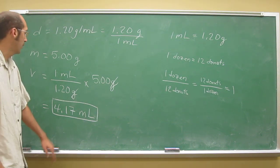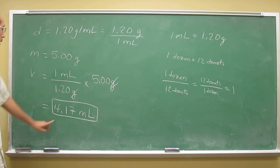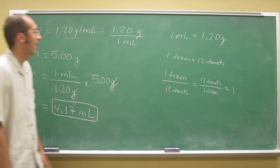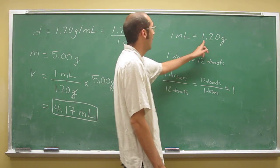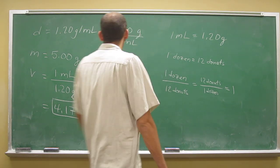So they're saying, well, how many mils do you have of this stuff if you've got 5 grams of it? Well, you've got 4.17 mils. And does that make sense? Yeah, you should have less than 5 mils. Why? Because 1 mil weighs more than 1 gram, if that makes sense.